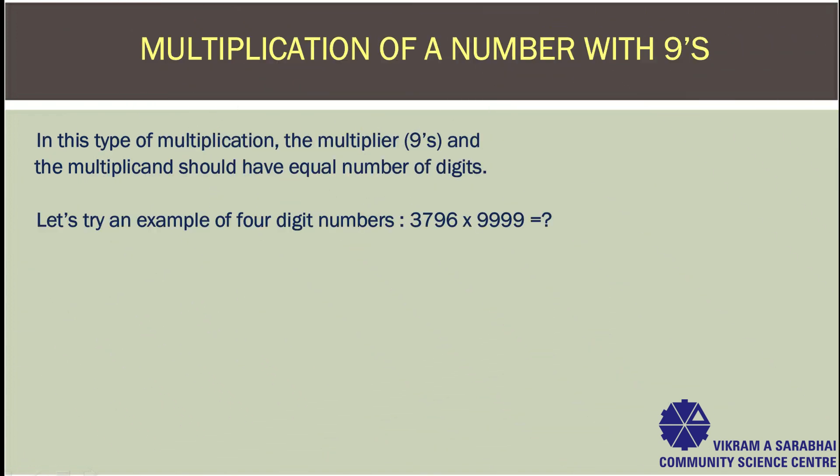Let's try another example to verify whether the same method works for 4-digit numbers or not. What you will get when you take a 4-digit number like 3796 with 9999? Step 1: Subtract 3796 by 1. That is 3796 minus 1. You get 3795.